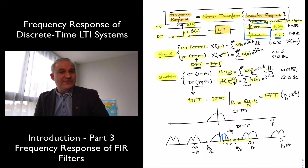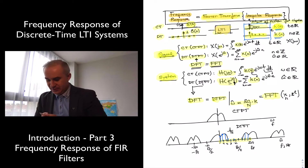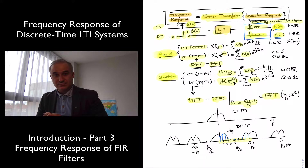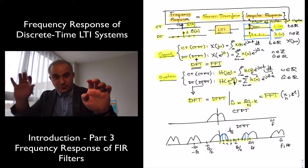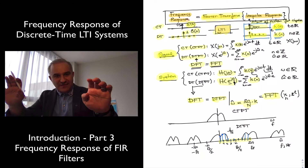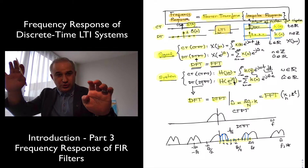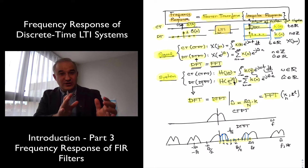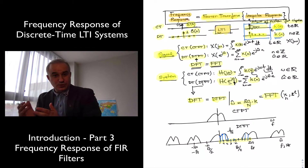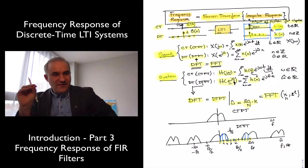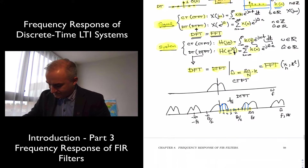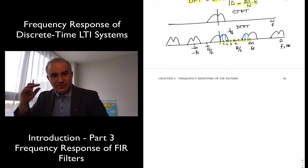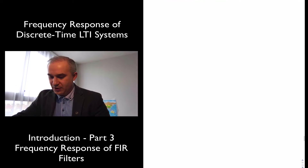So what is the frequency response of an FIR filter — a finite impulse response filter? We need to compute the Fourier transform of the impulse response. An FIR filter is digital, so it is going to be the discrete time Fourier transform of the impulse response. And since it is a finite impulse response, this is just a finite set of numbers, so this is going to be easy to do.